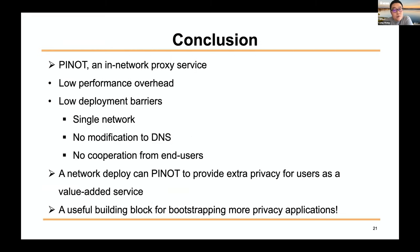In conclusion, we designed and implemented PNOT, an in-network proxy service for obfuscating IP addresses. A network may deploy PNOT to provide actual privacy benefits to customers as a value-added service. PNOT has very low performance overhead and low deployment barriers, requiring only a single network and no modification to DNS or collaboration from users. PNOT can also serve as a useful building block for bootstrapping more privacy applications.